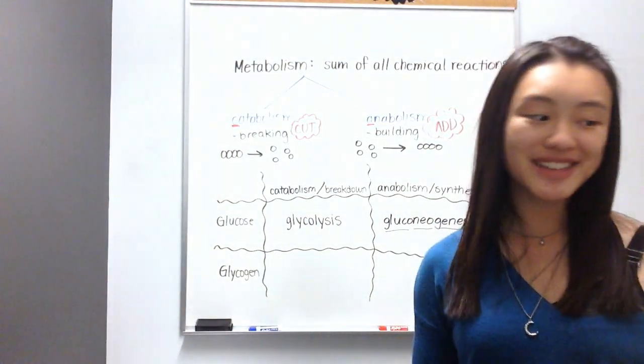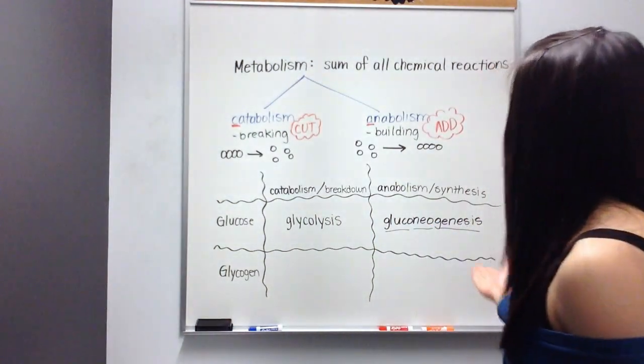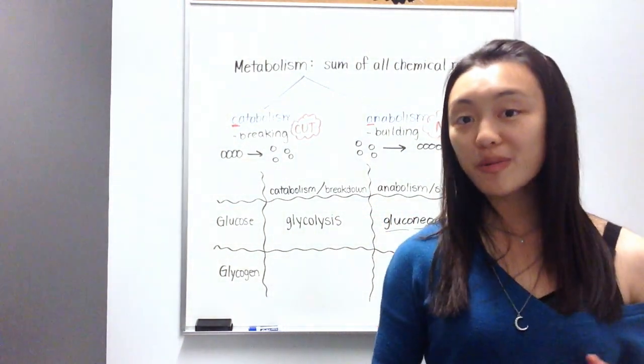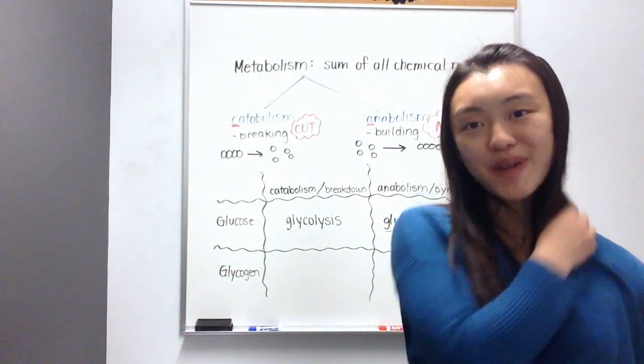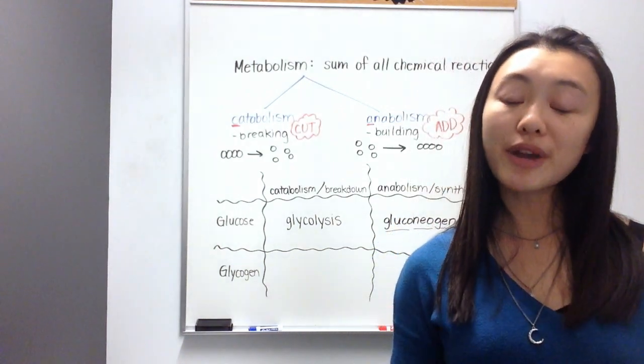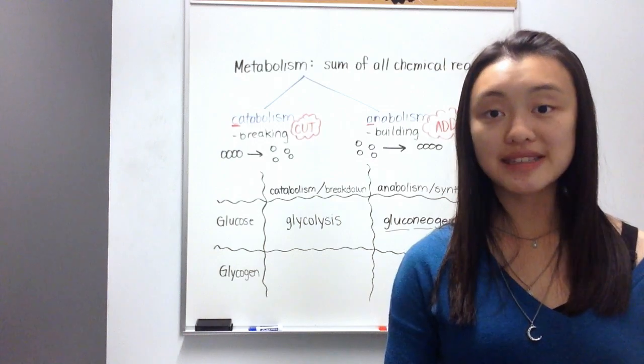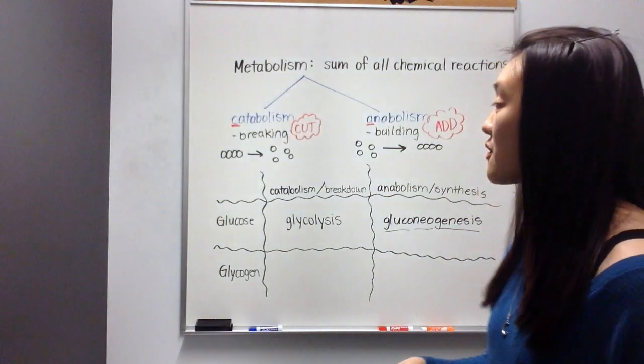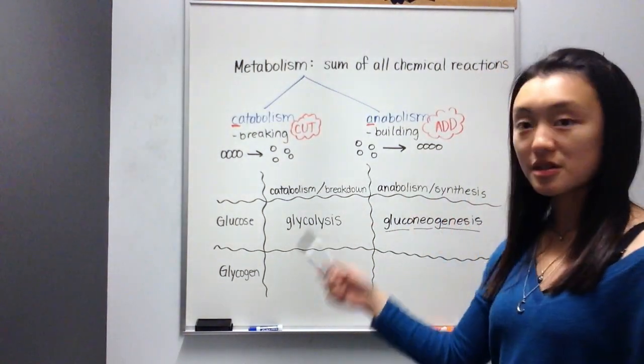And what do we form these new sugars out of? Well, to form a glucose molecule, we can make it out of fat or we can make it out of protein. As you probably remember from my digestion and metabolism video, we can break down proteins and fats for energy. But in order to go from protein to energy, we have to convert it through an intermediate, which is glucose.